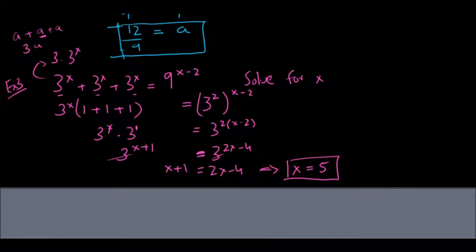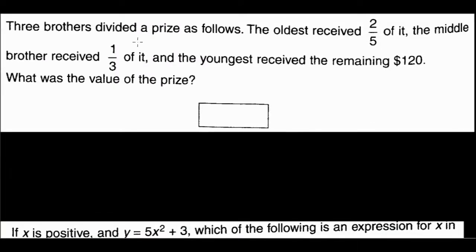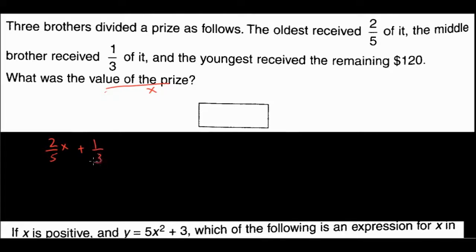Next problem: three brothers divided a prize. The oldest received two fifths of it, the middle brother received one third of it, and the youngest received the remaining 120. What was the value of the prize? Let x be the total prize value. Setting up the equation: two fifths x plus one third x plus 120 equals x.